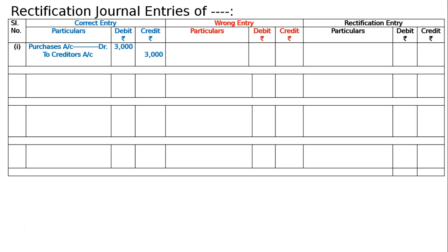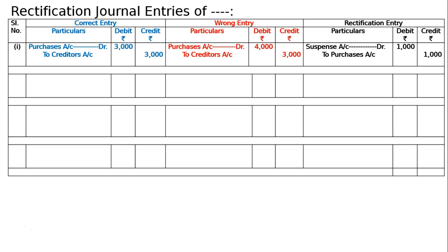The wrong entry was purchase account debited to creditor account four thousand instead of three thousand — one thousand excess. This overcasting in the debit can be nullified by crediting purchase account. Hence the rectifying entry is: suspense account debited to purchases account one thousand. Narration: overcasting in purchase book by rupees one thousand is rectified.